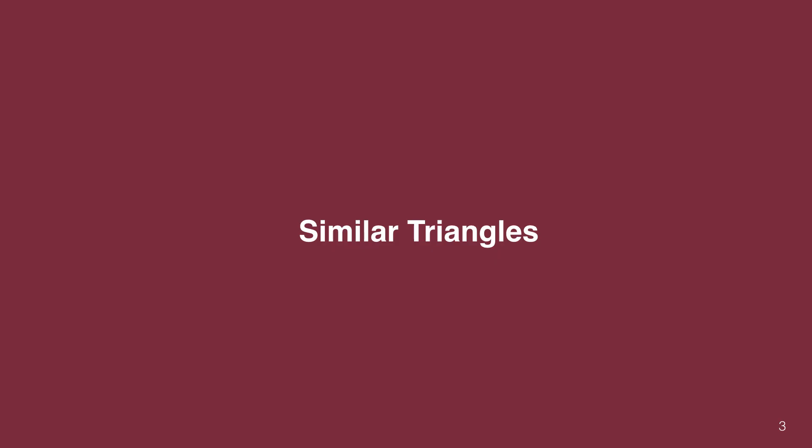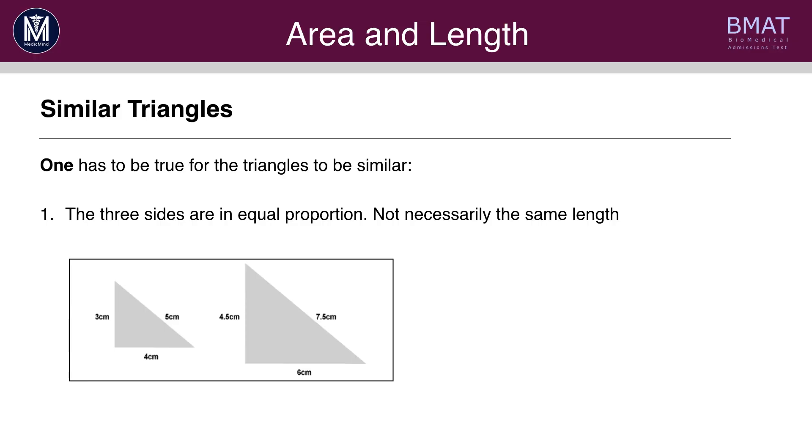First of all, we'll have a look at similar triangles. You can find three rules for similar triangles. One has to be true for the triangles to be similar. So, if we compare two triangles, one of these rules has to be true.